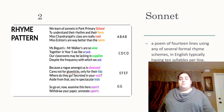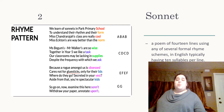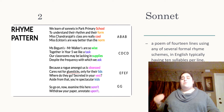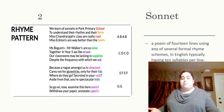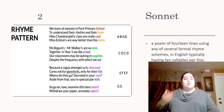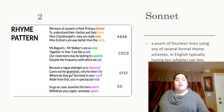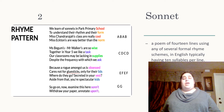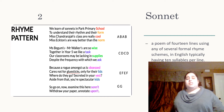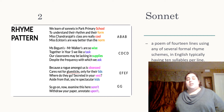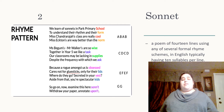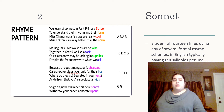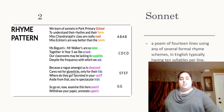The first one is a sonnet. A sonnet is a poem of 14 lines using any of several forms of rhythm or rhyme scheme. So for example, in the example I have there, the first is ABAB, then we go to CDCD, then EFEF, and then GG. And right there we have 14 lines.